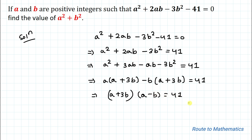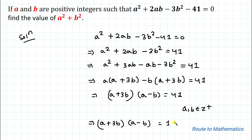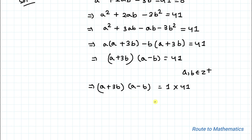So we have (a + 3b)(a - b) = 41. Since a and b are positive integers and 41 is a prime number, we can write this as (a + 3b)(a - b) = 41 × 1.